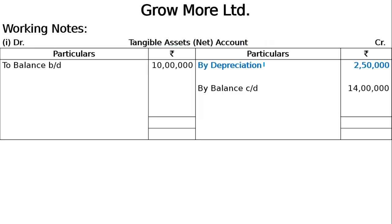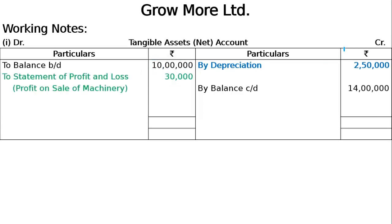Then depreciation: beginning of the year opening value, 25 percent. By depreciation, then two - statement of profit and loss. Adjustment two: during the year, one old machine costing one lakh, written down value 40,000 was sold for 70,000. So one lakh machine, written down value 40,000, and 50,000 goes to statement of profit and loss.